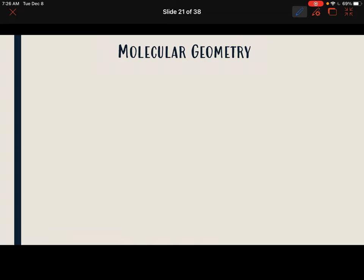Last class we talked about covalent bonding and how we draw Lewis structures for covalent bonds. This class we're going to expand on that and talk about molecular geometry.